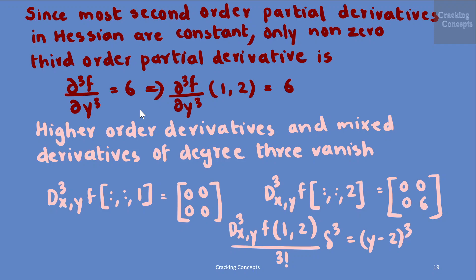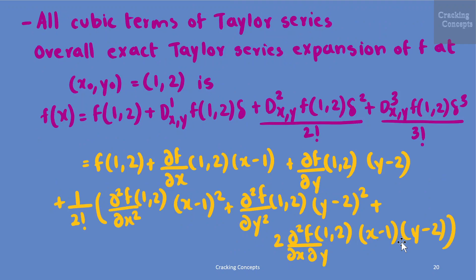Thus the third derivative tensor at (1,2) has components: f⁽³⁾(x,y)|(1) = [[0,0],[0,0]] and f⁽³⁾(x,y)|(2) = [[0,0],[0,6]], and the third order term f⁽³⁾(1,2)·δ³/3! has δ³ = (y−2)³, collecting all cubic terms of the Taylor series.